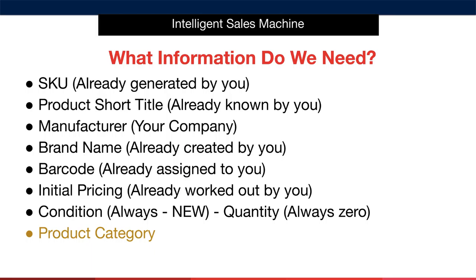Your initial price that you wish to sell at is also already known to you. The condition of the product will always be new, and for now the quantity that you are inserting is always zero to start with — don't worry if you have ordered 100 or 500 or whatever, for now it is zero. The actual product dimensions will not be required to install and save the placeholder listing, but you already know them and you will need them very soon, so you may as well have them with the other info. Lastly, as you can see in orange, is the product category.